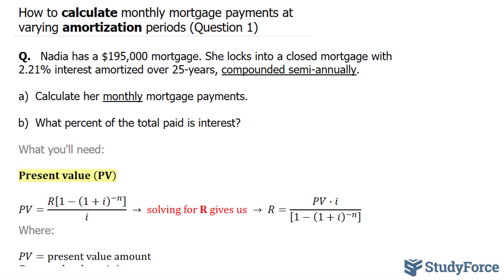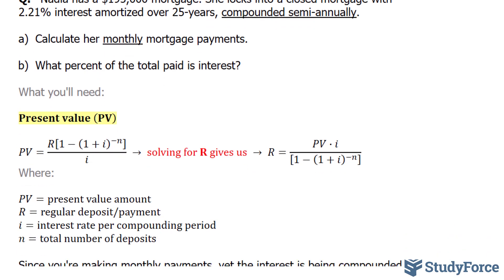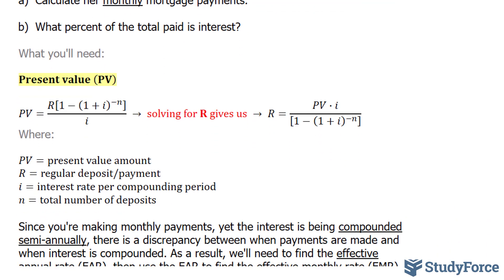To answer this question, we'll be using two formulas. We'll use the present value formula, which is shown here. And specifically, we are solving for R, which represents the regular deposits or payments. And to solve for R, we'll be using this version of the formula, where R is already isolated.